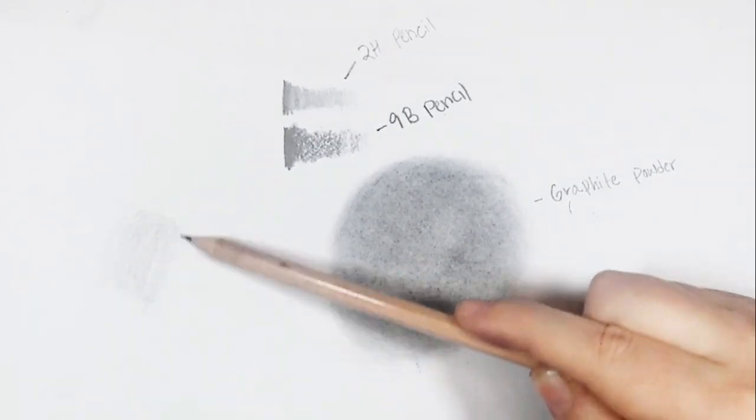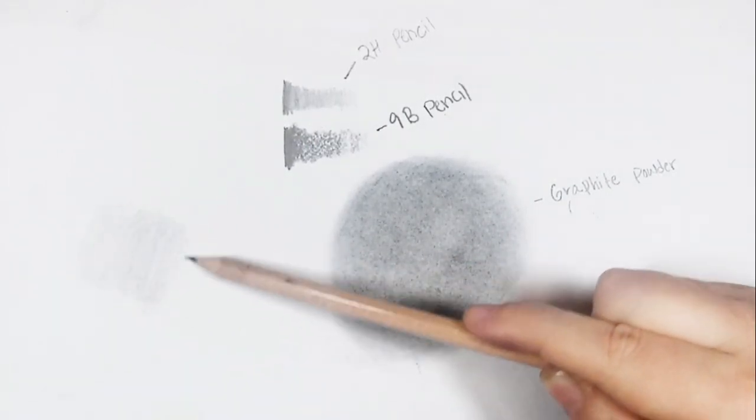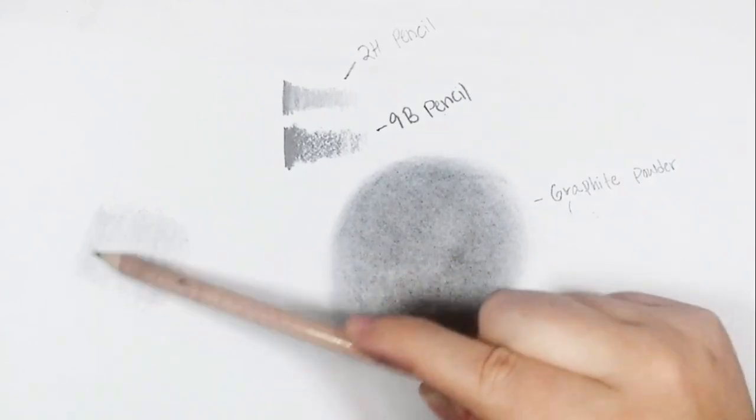Keep your hand at the end of your pencil when drawing large areas. This will help you to shade a large area much easier and keep your shading light.